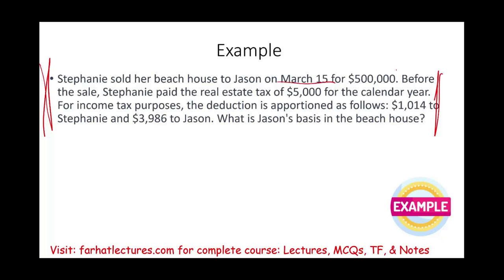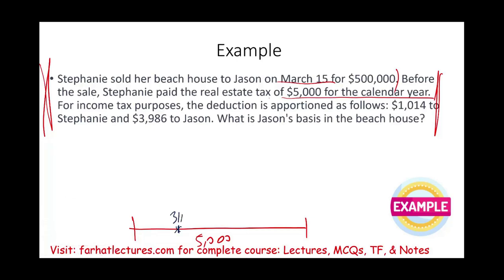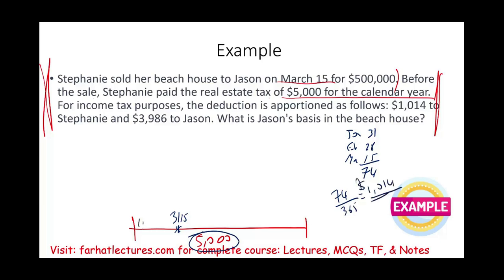Stephanie sold her beach house to Jason on March 15th for half a million. Before the sale, Stephanie paid the real estate taxes of $5,000 for the calendar year. So the full year requires $5,000 in taxes. She paid that tax early on in the year but sold her house on March 15th. For income tax purposes, who gets the deduction? Can Stephanie deduct the full $5,000? The answer is no. Stephanie has to figure out how much of the $5,000 she is responsible for. She owned the house for January (31 days), February (28 days, assuming not a leap year), and March 15 — all in all, 74 days. We take 74 divided by 365, which gives us $1,014. So her share is $1,014 only.